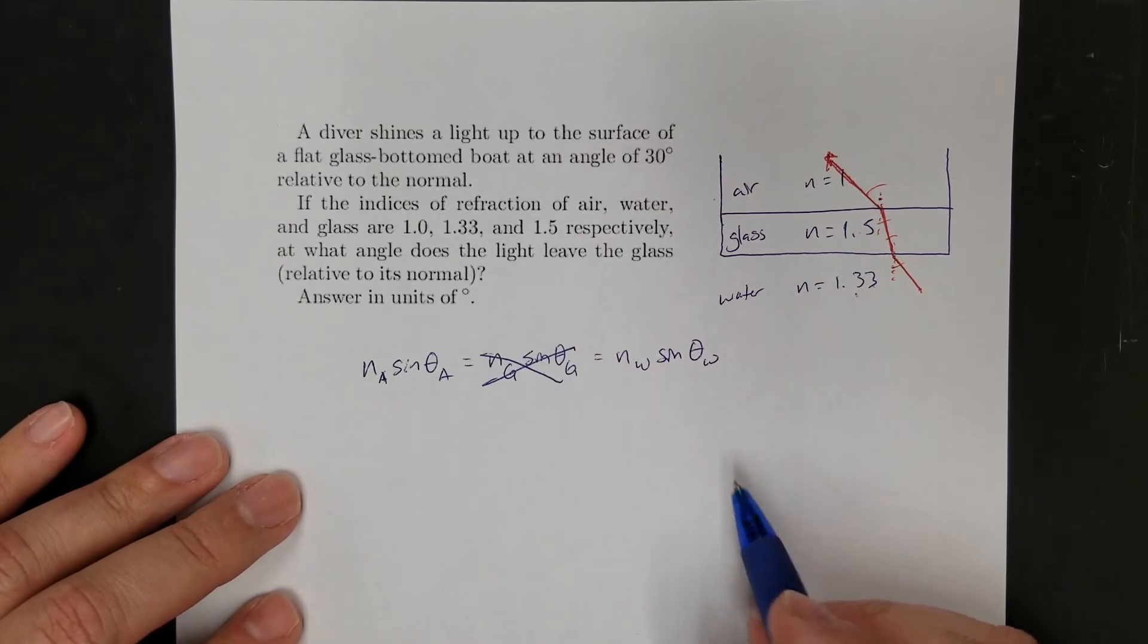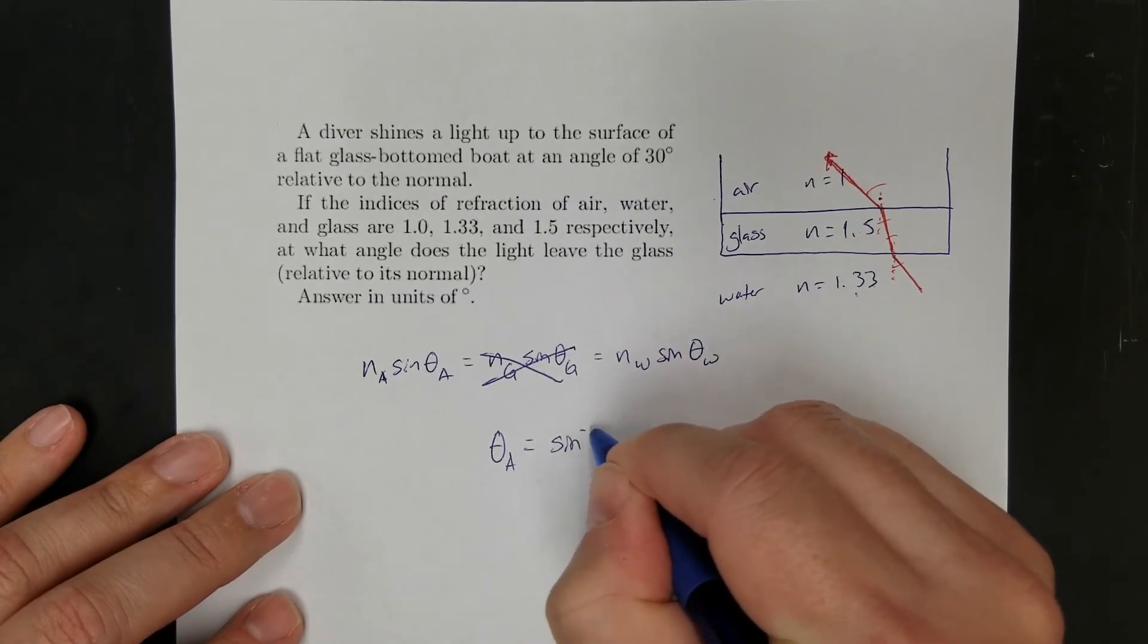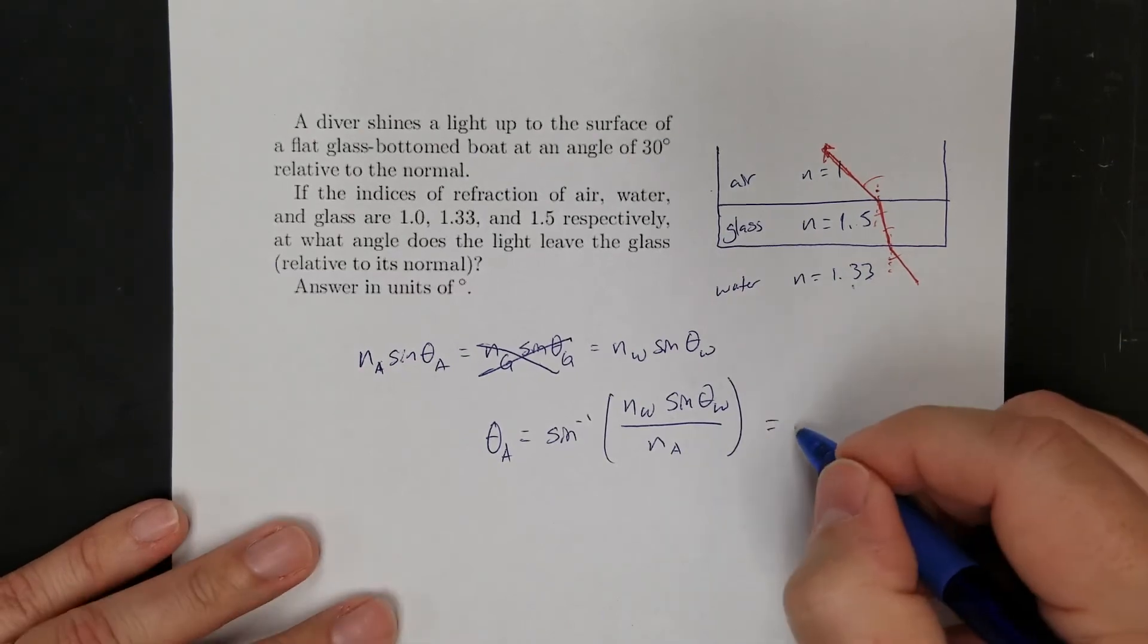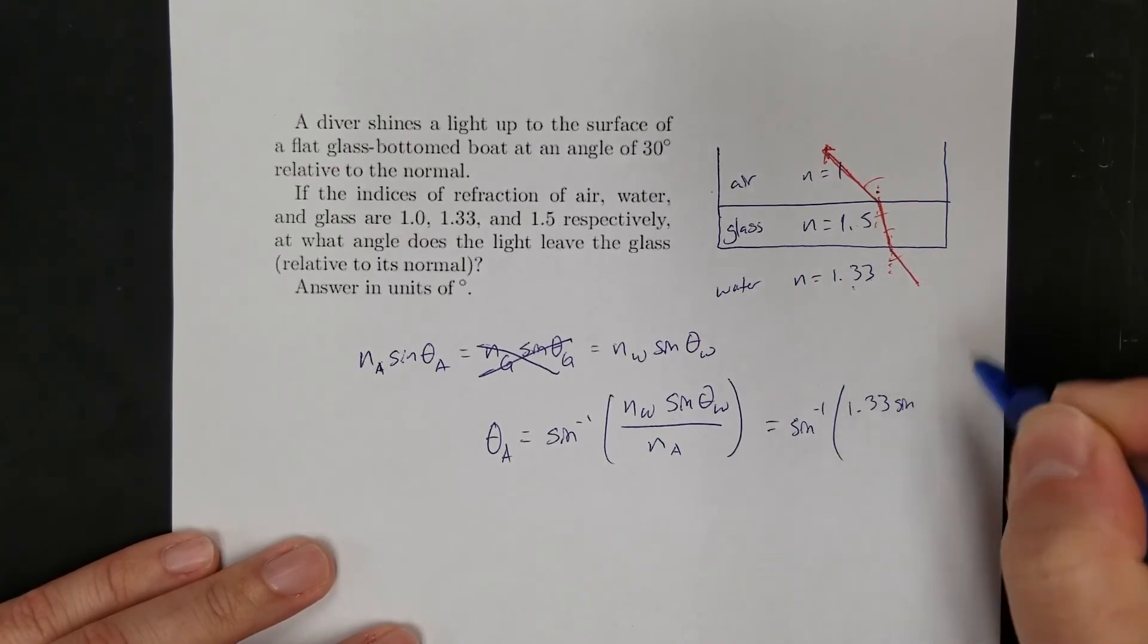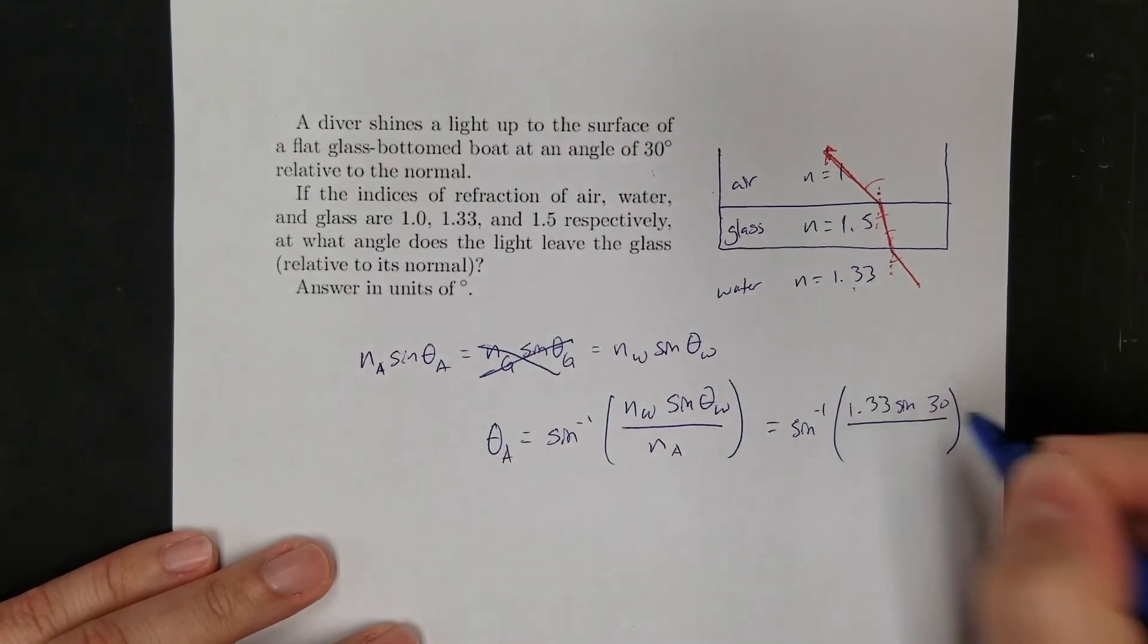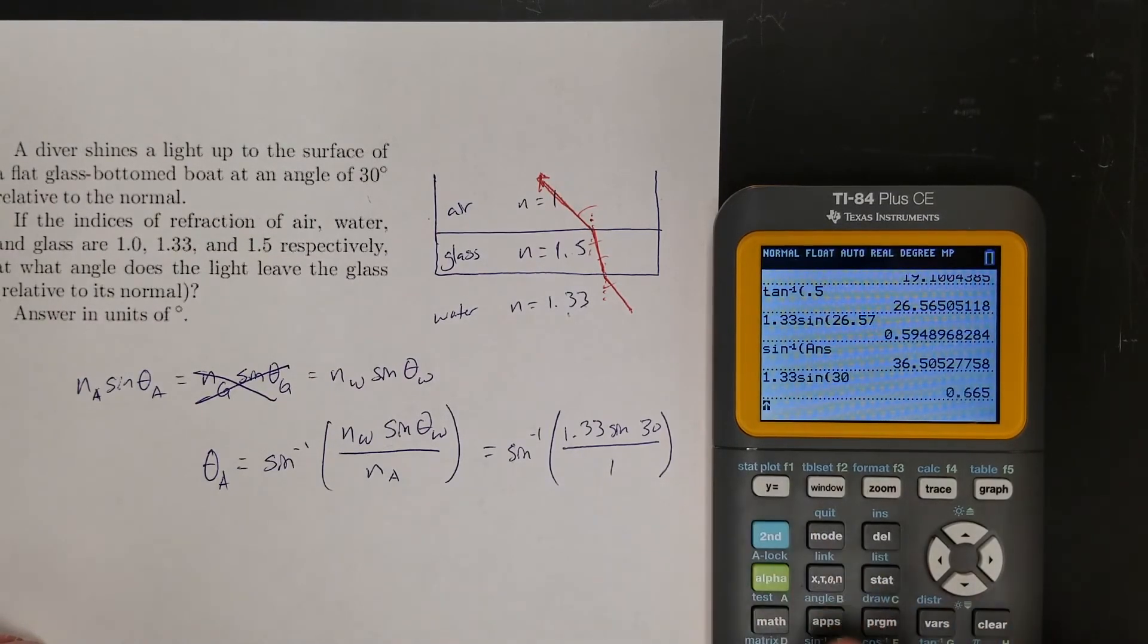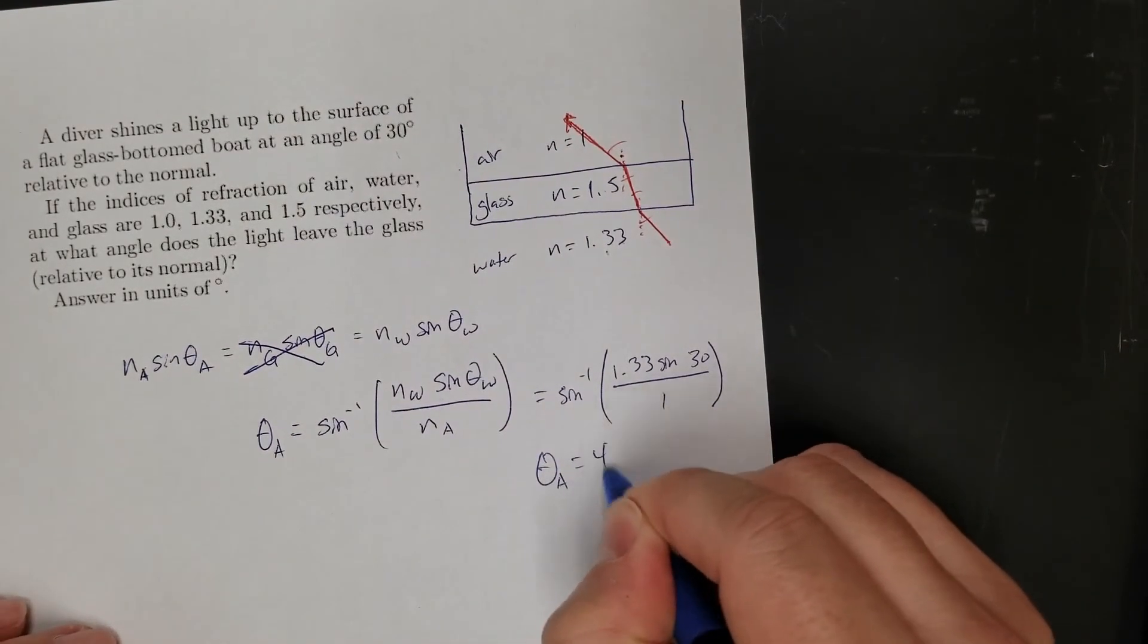So let's just skip ahead. So if I want the angle in air, now this just becomes like a problem we've done before. So your angle in the air is going to be equal to the arc sine of water sine theta water over index of air. Easy peasy. So now that's going to equal arc sine of, index of refraction of water is 1.33 sine theta water was 30 degrees, sine 30 over 1, index of refraction of air. Let's go do that. And I get 41.68 degrees.